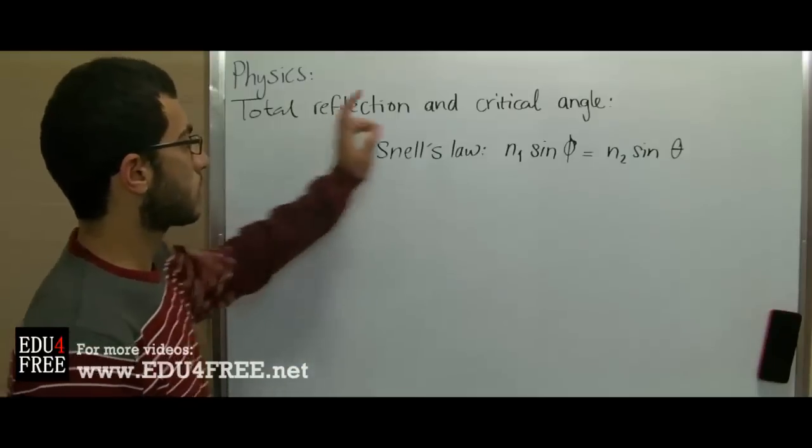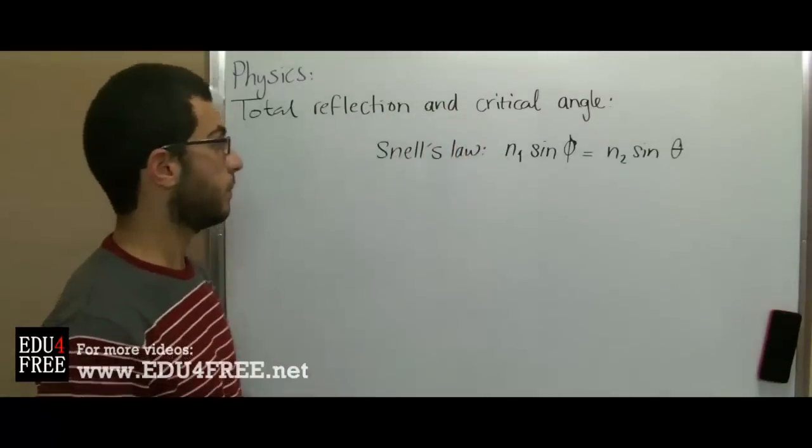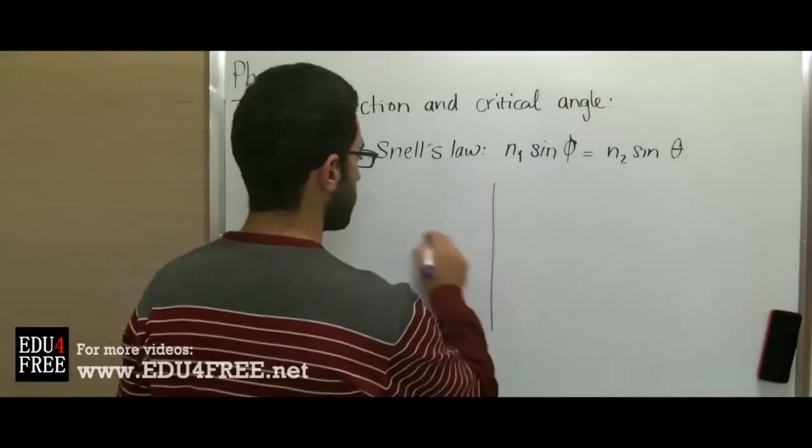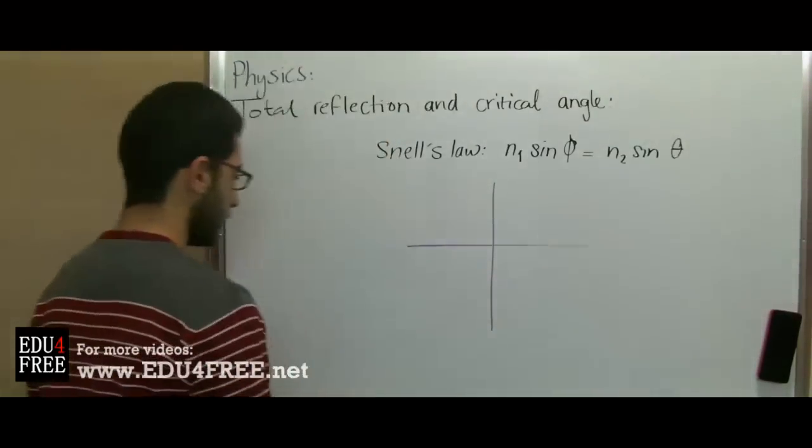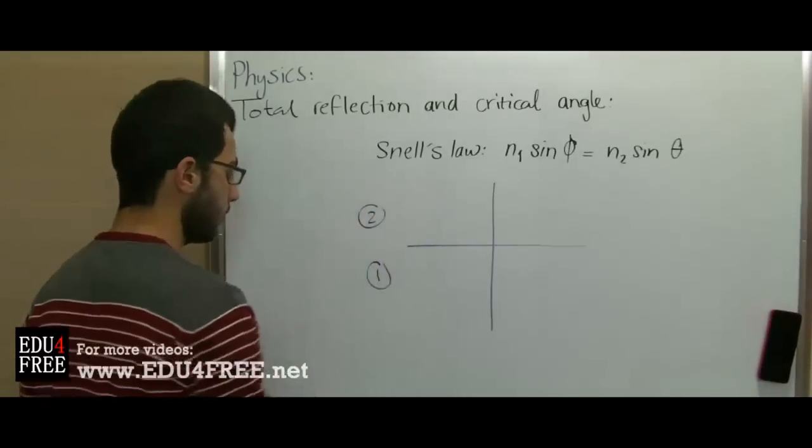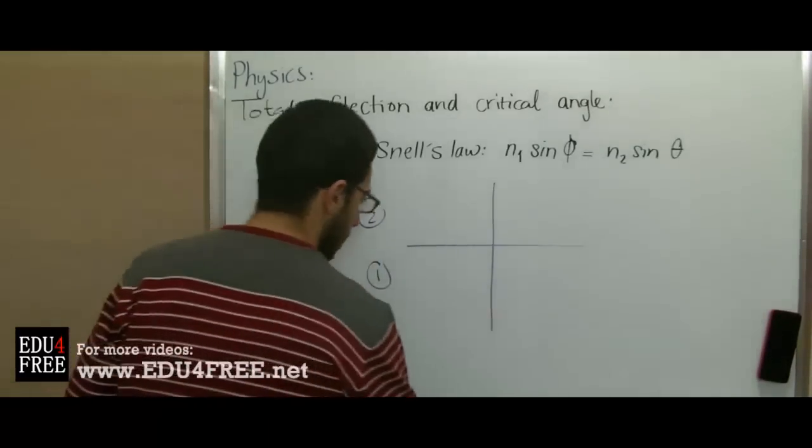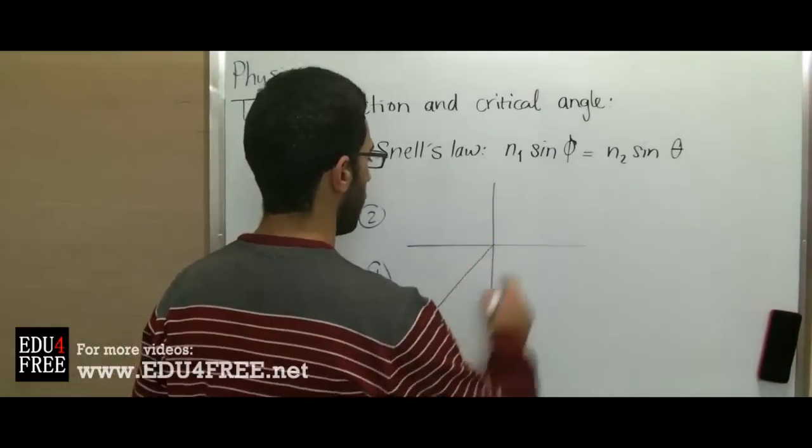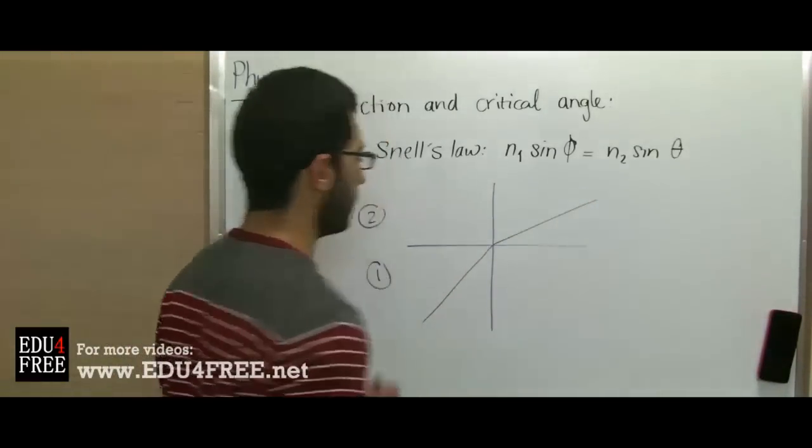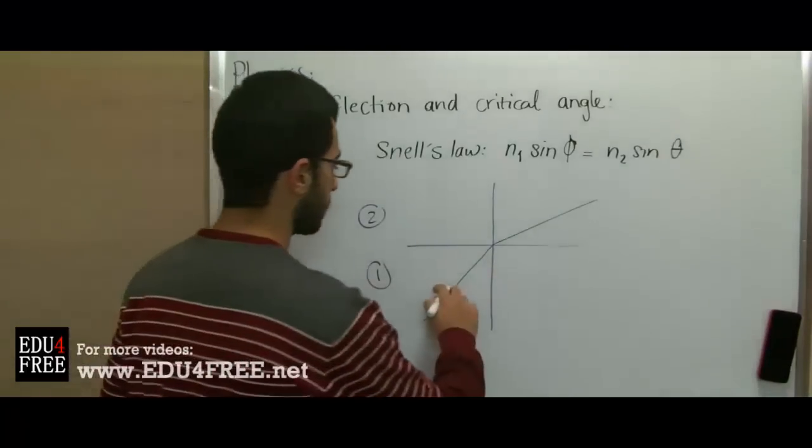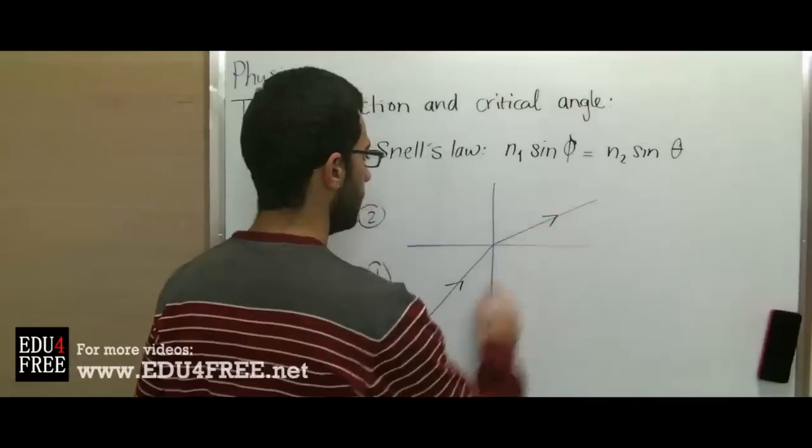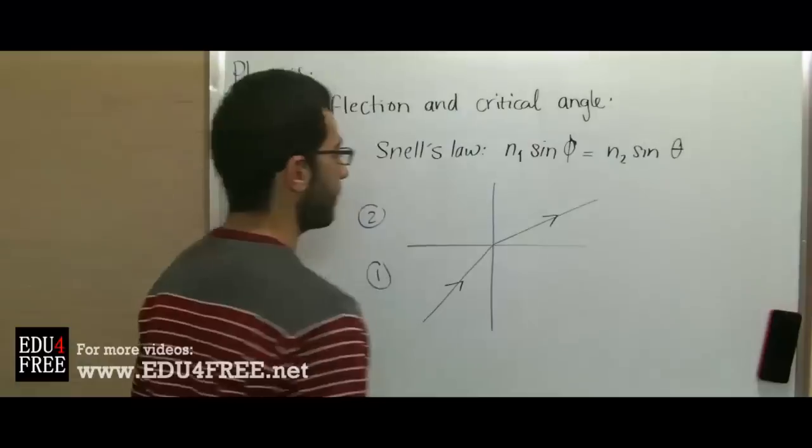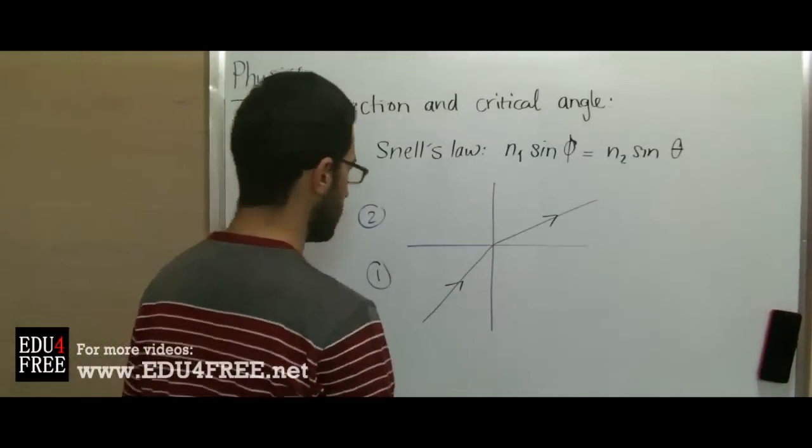Today we will learn about a new term called the critical angle. If we have two mediums, medium number one and medium number two, and a light ray moves from medium one to medium two, light refraction takes place. The light ray makes angles with the normal to the two mediums.